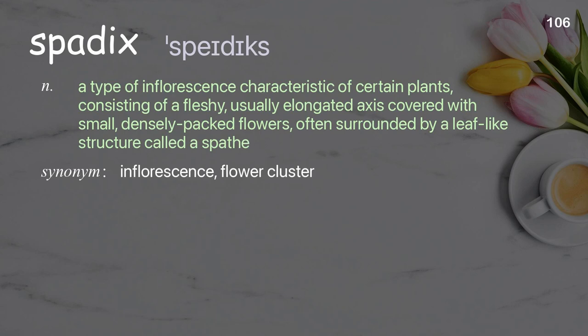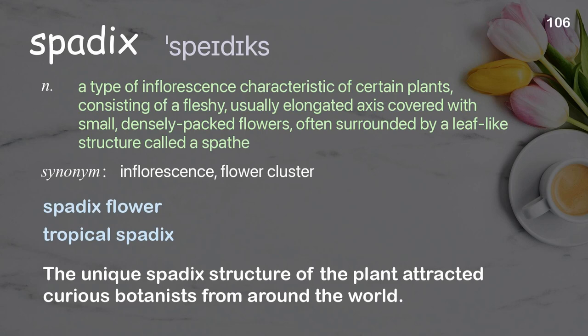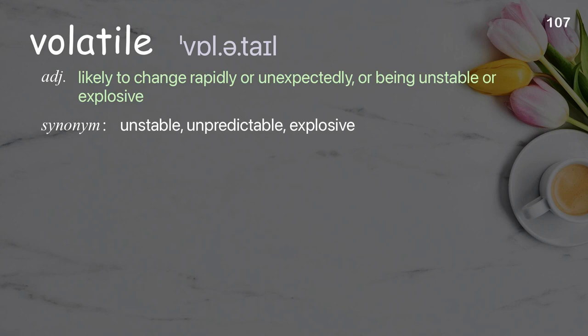Spadix: A type of inflorescence characteristic of certain plants, consisting of a fleshy, usually elongated axis, covered with small, densely packed flowers, often surrounded by a leaf-like structure called a spatha. Examples: tropical spadix. The unique spadix structure of the plant attracted curious botanists from around the world.